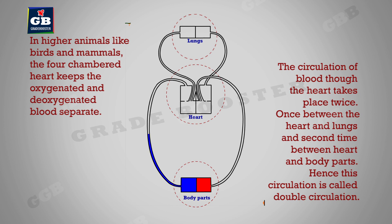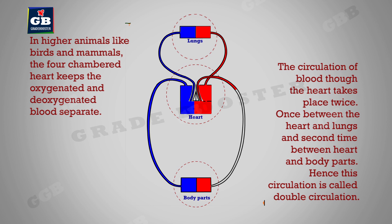The circulation of blood through the heart takes place twice — once between the heart and lungs, and a second time between the heart and body parts. Therefore, this circulation is called double circulation.